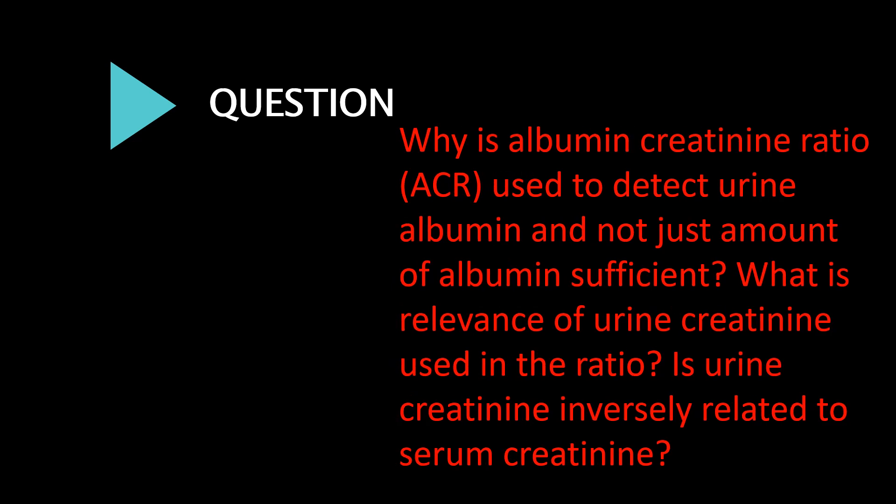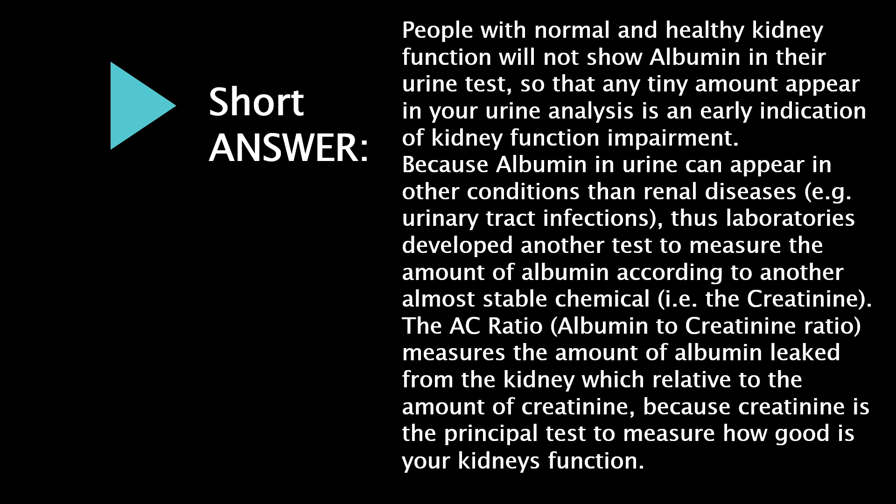Why is the albumin creatinine ratio (ACR) used to detect urine albumin, and is the amount of albumin alone not sufficient? What is the relevance of urine creatinine used in the ratio? People with normal and healthy kidney function will not show albumin in their urine, so any tiny amount appearing in a urine test is an early indication of kidney function impairment. Because albumin in urine can appear in conditions other than renal diseases — such as urinary tract infections — laboratories developed a test to measure albumin relative to another stable chemical: creatinine.